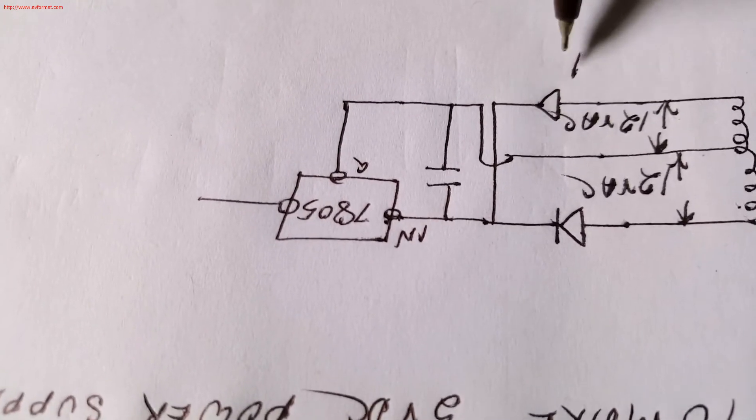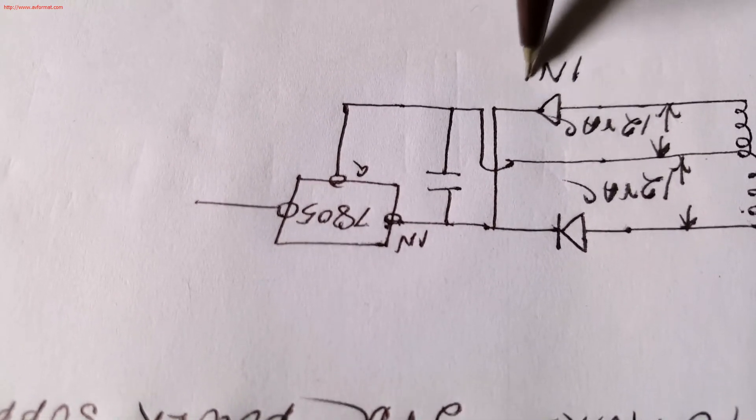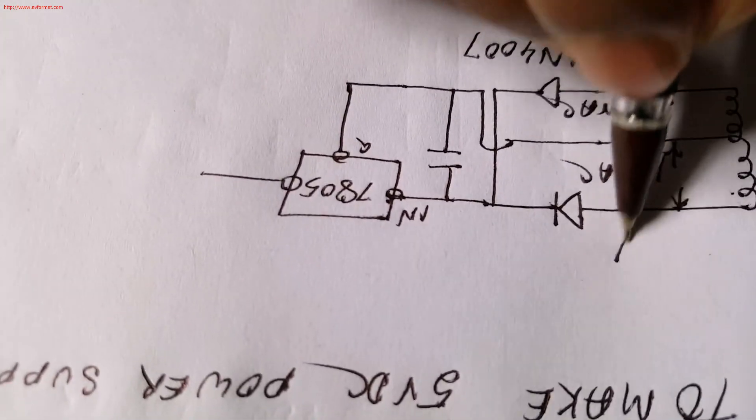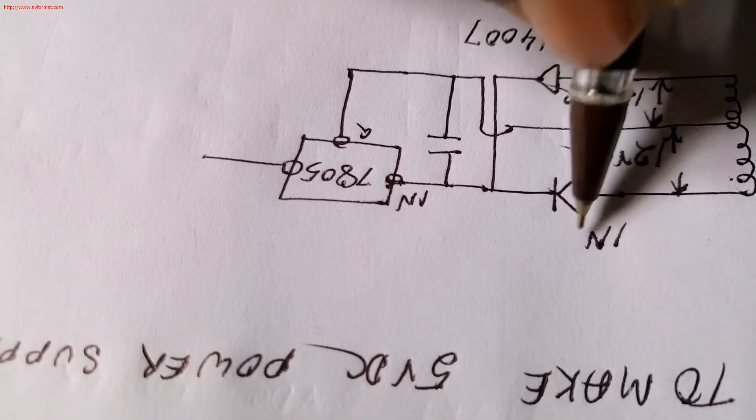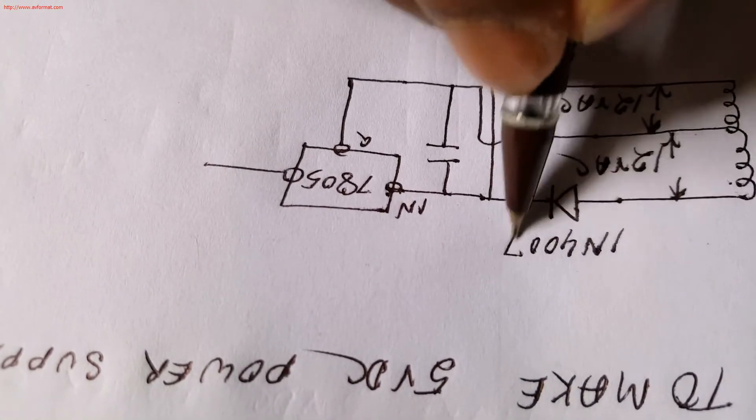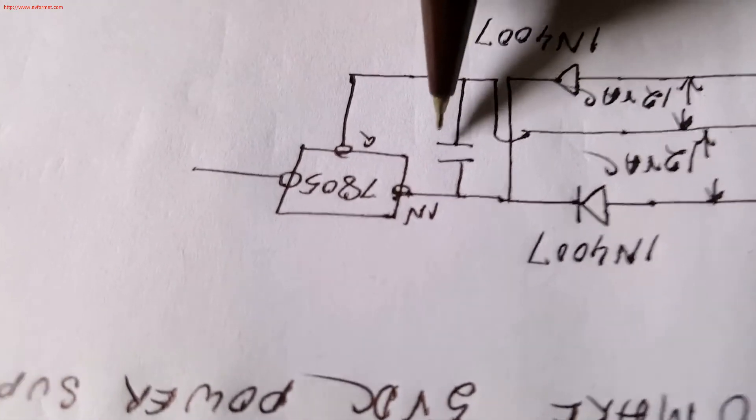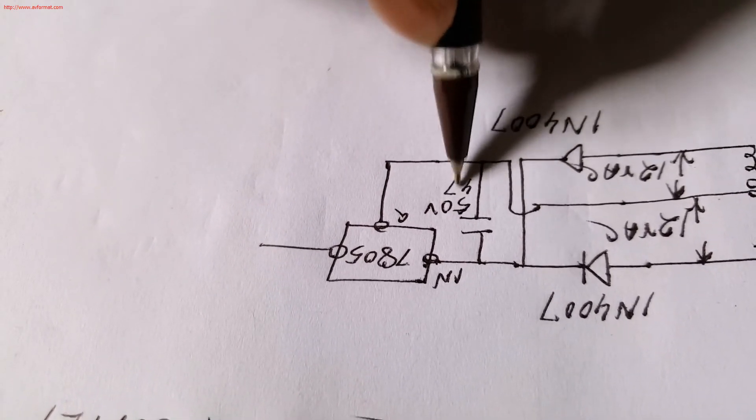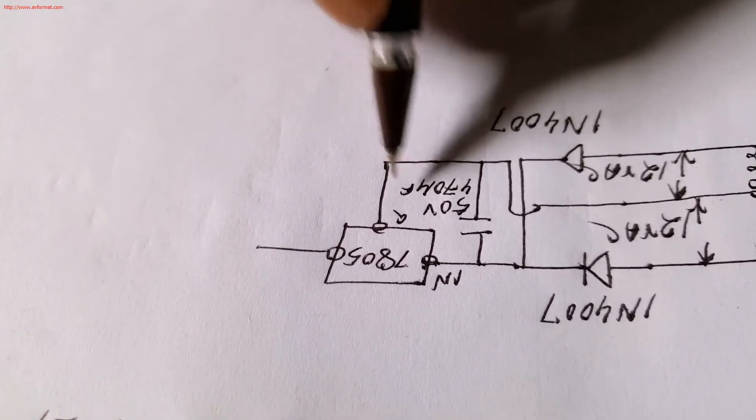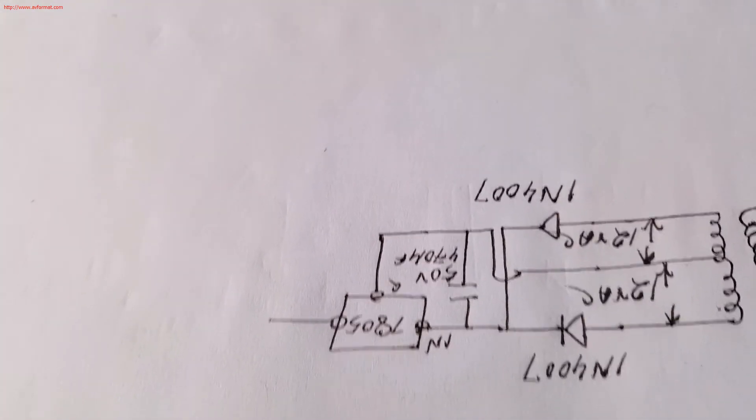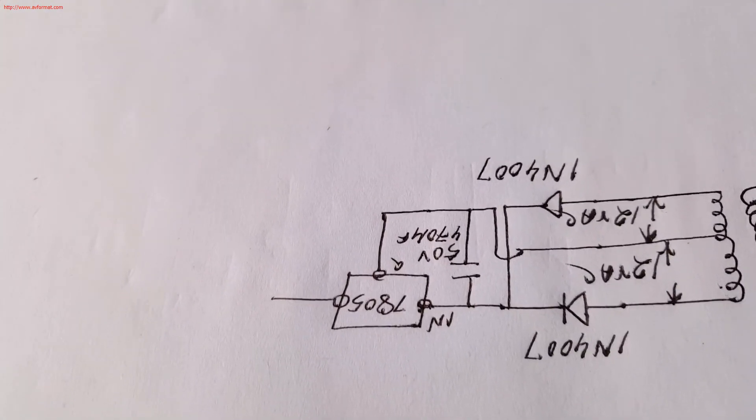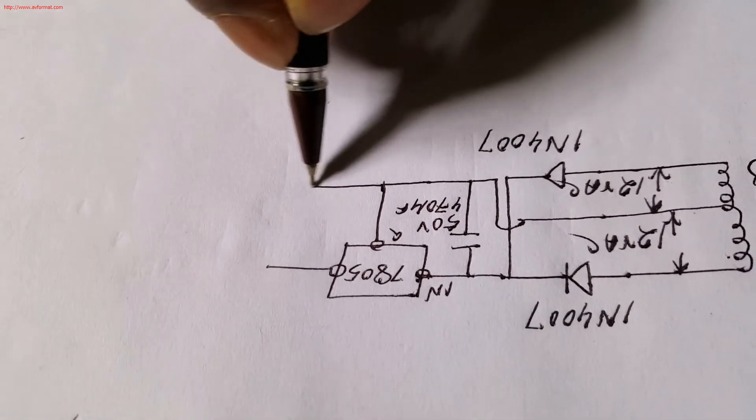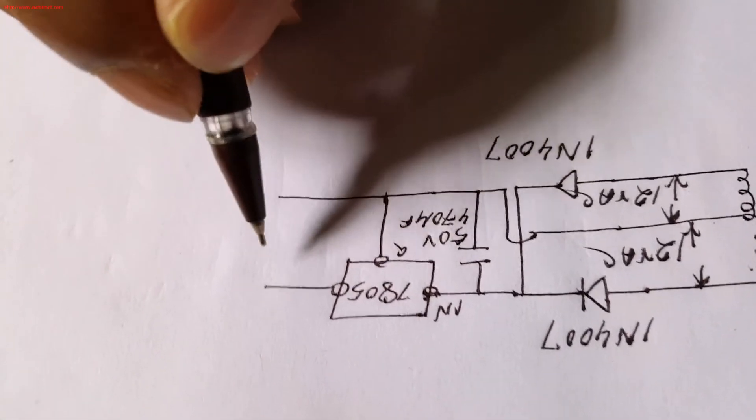This diode we have used 1N4007, this one is same 1N4007, and capacitor I have used here 50 volt 470 microfarad. You can use any other suitable capacitor here to rectify.